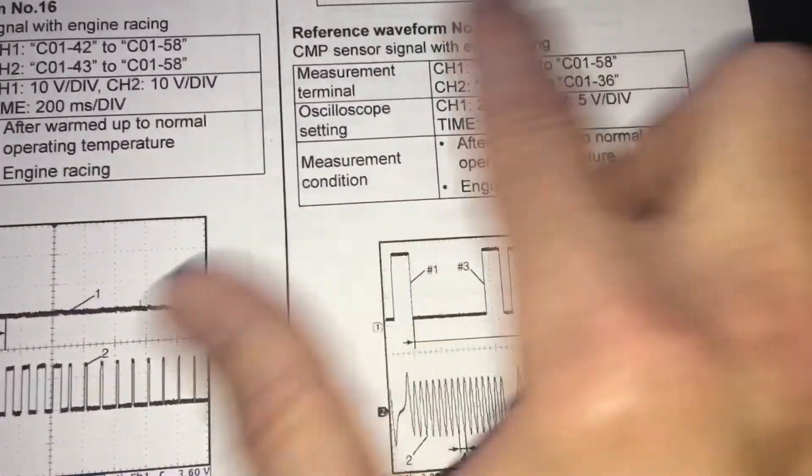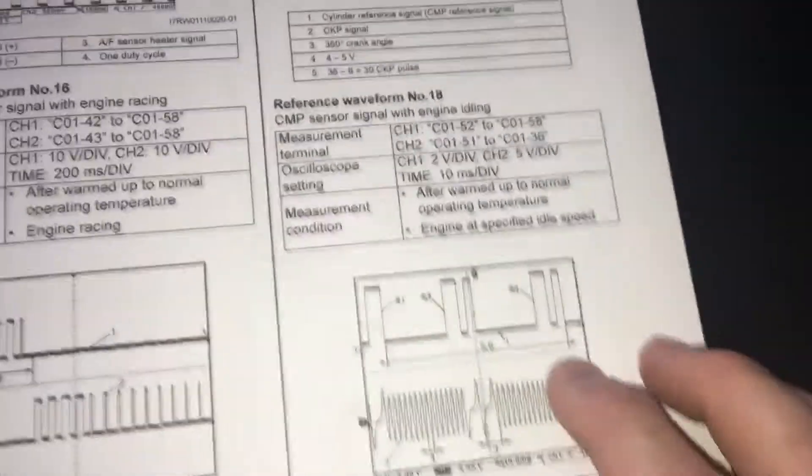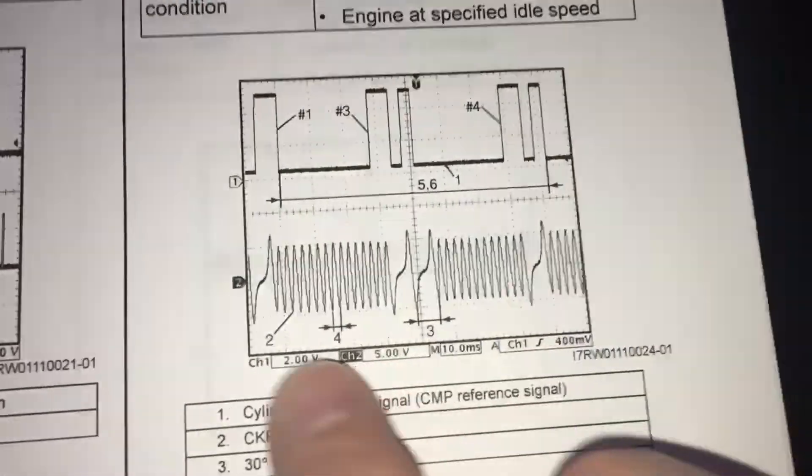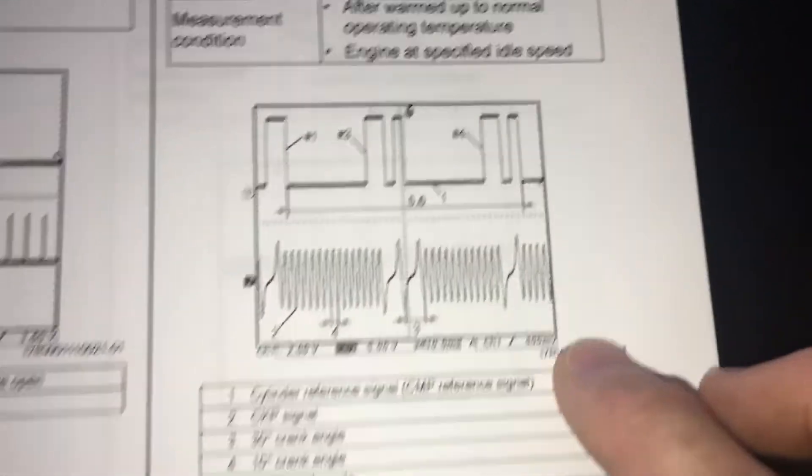And it even tells us how to set up our scope, right? The time base, and the voltage or amplitude settings on the scope, and we should get a damn good idea of what we're interested in. So this is what we can expect from the crank sensor.